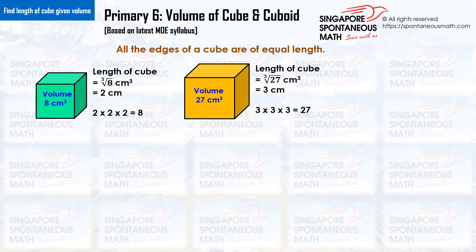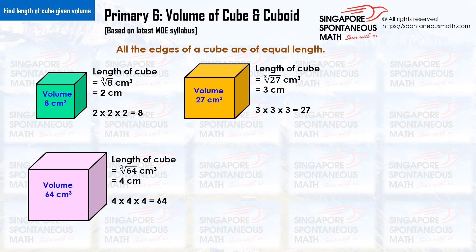If the volume of a cube is 27 cm³, the length of each side of the cube is 3 cm. The cube root of 27 is 3, because 3 times 3 times 3 equals 27. If the volume of a cube is 64 cm³, the length of each side is 4 cm. The cube root of 64 is 4, because 4 times 4 times 4 equals 64.